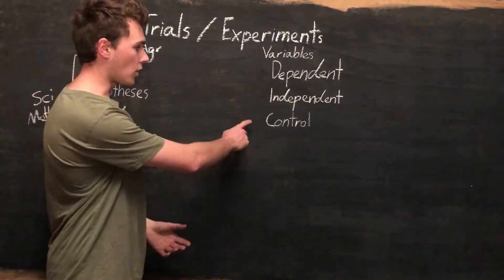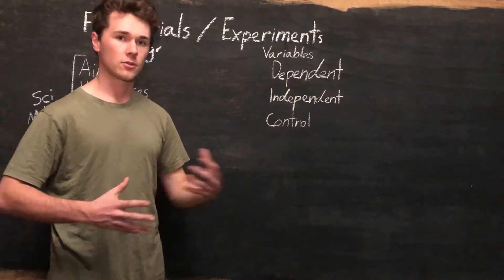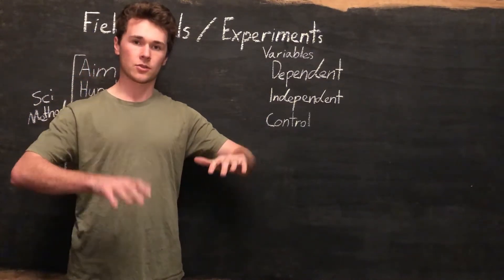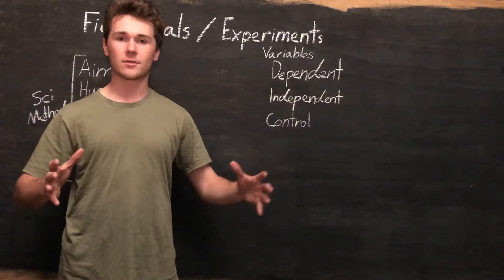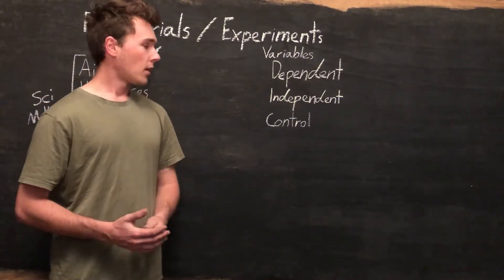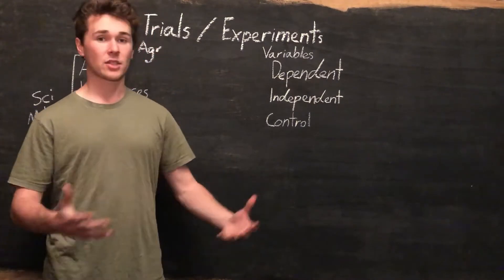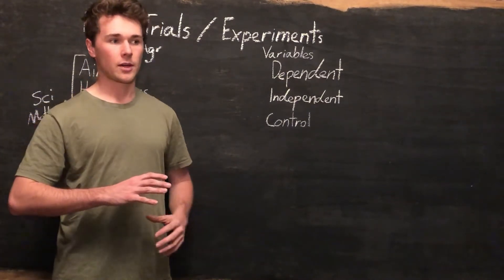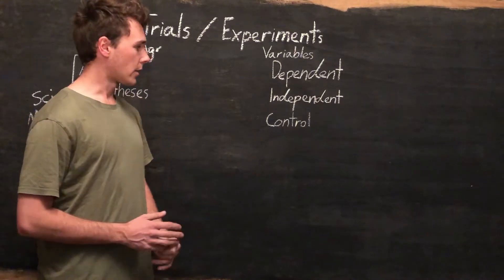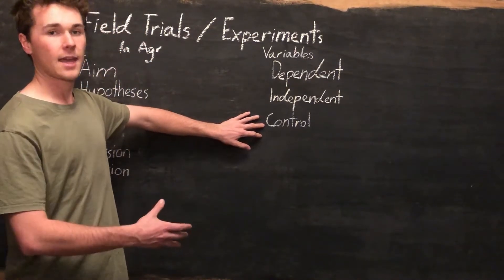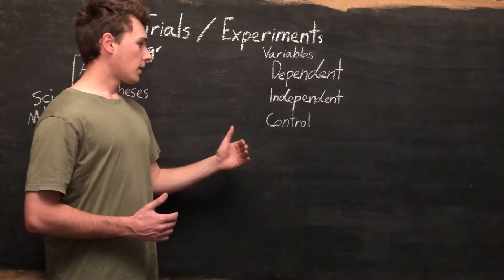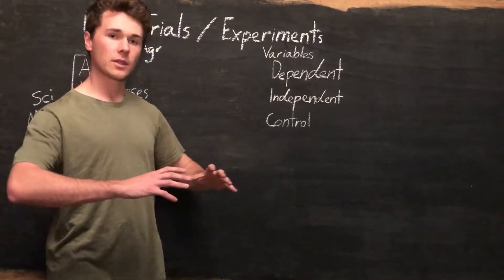We have controls because we don't want other things influencing our results. If we have non-treated and treated seeds but then apply different rates of nitrogen fertilizer, how do we know what effect our Biocast is actually having? Or if there's shading over half the paddock, how do we know what's affecting what? We want to control as many factors as we can. In agriculture that can be challenging because we're out in the environment, but controlling variables just means keeping everything constant across both groups.